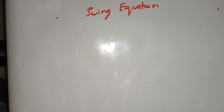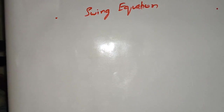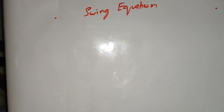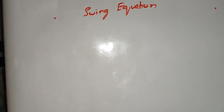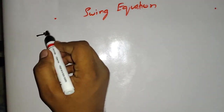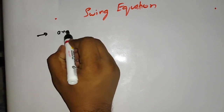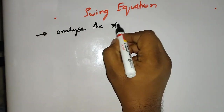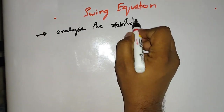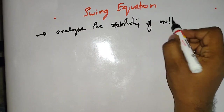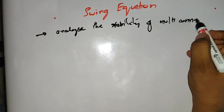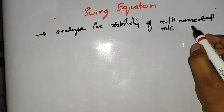Hello friends. Now I will discuss the swing equation in power systems. As you have seen in the last class, we discussed the dynamics of synchronous machines and how the equations are represented in various combinations. Now I am going to the swing equation. The swing equation is used to analyze the stability of multi-machine connected systems.